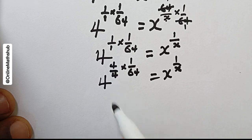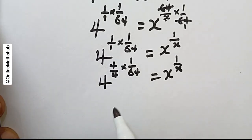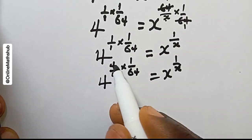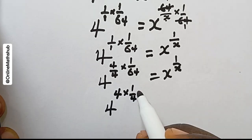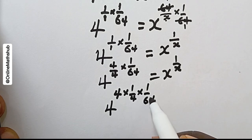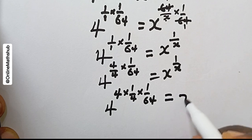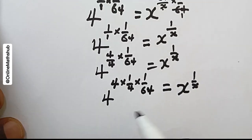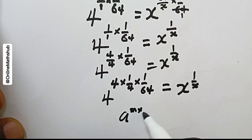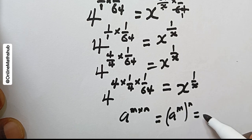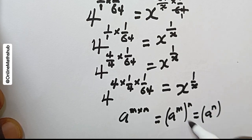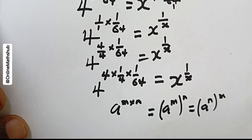Now I'm going to rewrite the left side. I'll write 4 divided by 4, multiplied by one over 64. Then I'll apply the index rule which states that a to the power m, multiplied by n, can be written as a to the power m, with n in a bracket — or equivalently you can pull out m from the exponent.